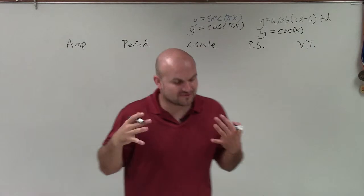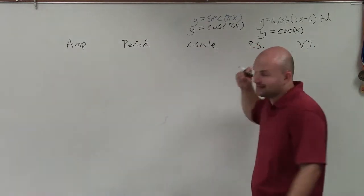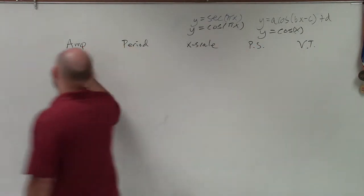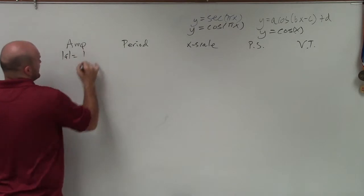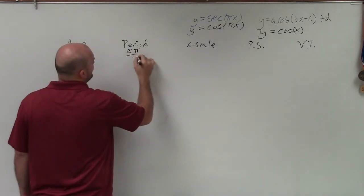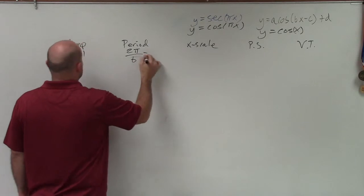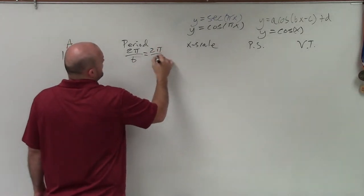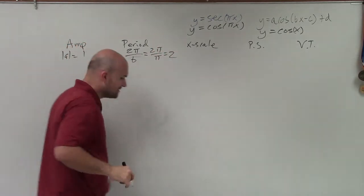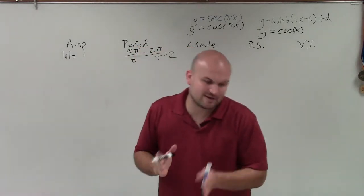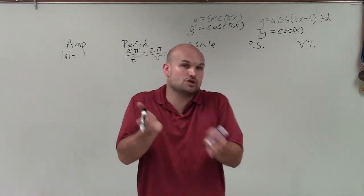I'm just going to go through everything because it's very important for you to be able to whip these out. The amplitude is the absolute value of a, which in this case is just 1. Our period is 2 pi divided by b, which in this case is 2 pi divided by pi, which equals 2. That means the distance that it's going to take the graph to repeat itself is not 2 pi anymore, it's now 2.